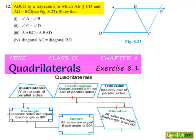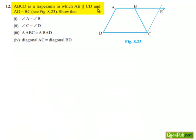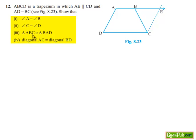Moving on to the twelfth question. ABCD is a trapezium in which AB is parallel to CD and AD is equal to BC. Show that angle A is equal to angle B, angle C is equal to angle D, triangle ABC is congruent to triangle BAD, and diagonal AC is equal to BD.